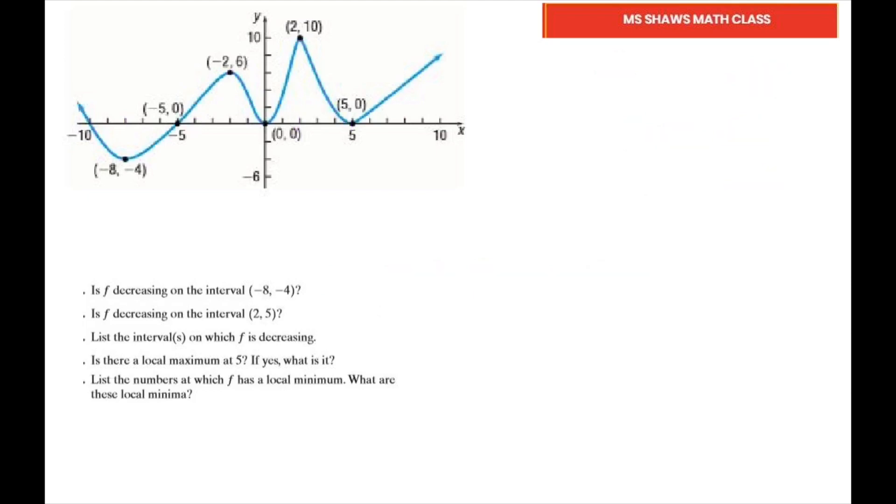Is there a local maximum at x = 5? Let's look at 5. No, it's a local minimum. Here are your local minimums right here. This is a local minimum at x = 5, and the value is 0.